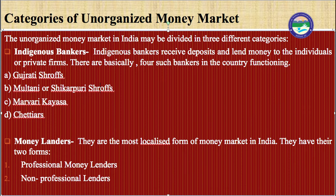Indigenous bankers receive deposits and lend money to individuals or private firms. There are basically four such bankers functioning in the country: Gujarati Sharofs, Multani or Shikarpuri Sharofs, Marwadi Kayas, and Chettiars. Gujarati Sharofs operate in Mumbai, Kolkata, as well as industrial, trading, and port cities. Multani or Shikarpuri Sharofs operate in Mumbai, Kolkata, Assam tea gardens, and northeastern India. Marwadi Kayas mainly operate in Gujarat with some presence in Mumbai and Kolkata. Chettiars are active in Chennai and the ports of southern India.